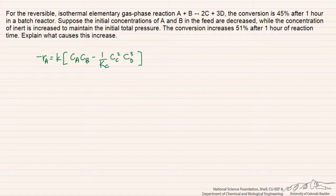The fact that we can get to a higher conversion in this case is that although the change in the inlet concentration of the reactants will change the overall concentration of our species involved in the reaction — because we have this inert present — that's going to cause the forward rate of reaction to go down. But the reverse rate of reaction is even more dependent on concentration than the forward reaction, so it's going to go down by more. The effect on the net rate of reaction as we approach equilibrium is therefore to increase it, so that we can reach this higher conversion of 51%.